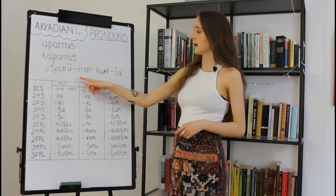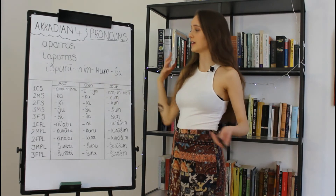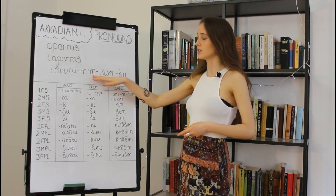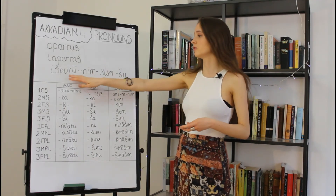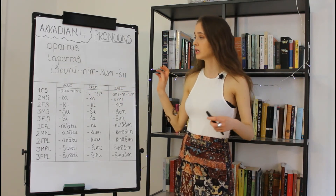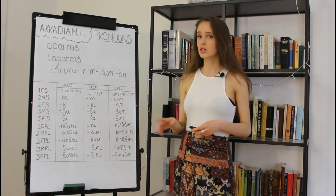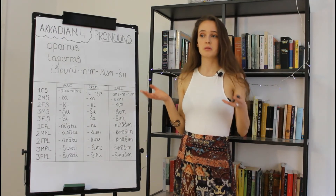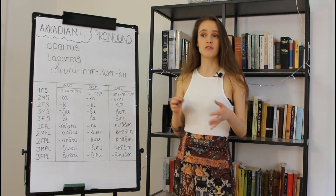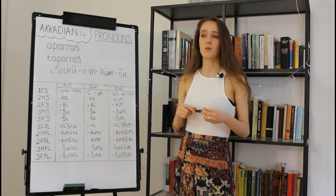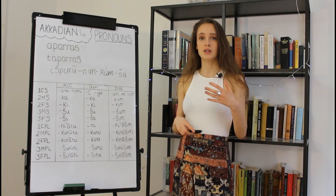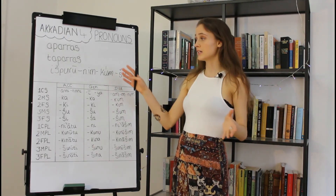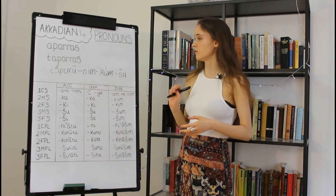The ventive suffix is essentially a repurposing of our first common singular dative pronominal suffix, except that it's left untranslated. Its original purpose was to indicate motion towards the speaker — the best way to explain it in English is the difference between 'they went to the cinema' versus 'they came to the cinema,' where the latter implies motion towards the subject. In practice, the ventive is untranslated and you will simply see it pop up between the verbal form and the following suffixes.